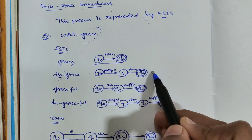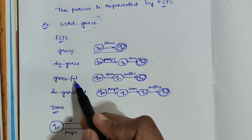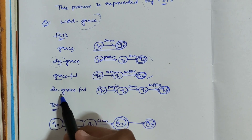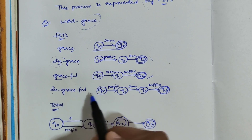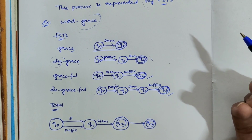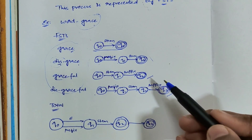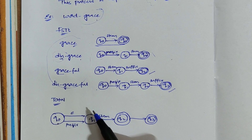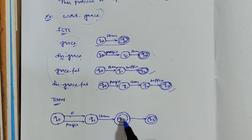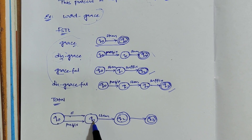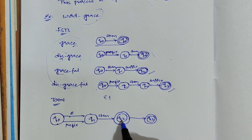Then I am adding a suffix to this base word, and also a prefix and suffix combined. This is the final automata for that. You have to draw a finite state transducer so that all these examples fit in one finite automata. You can see here this is the starting state, and epsilon is nothing but a null value. We will have two ending states, q2 and q3. Now take the word 'grace': from q0 to q1 I take epsilon, and from q1 to q2 it is the stem, which is 'grace', so the word you get is 'grace'.